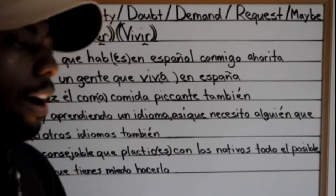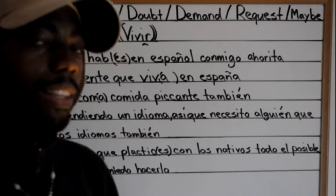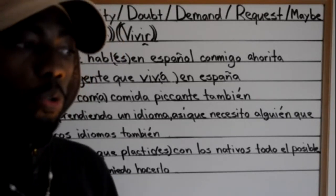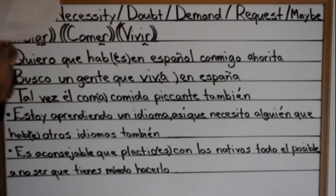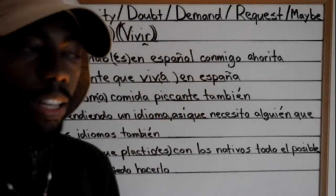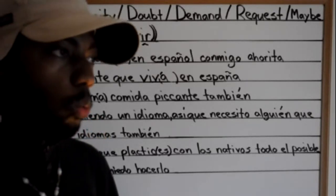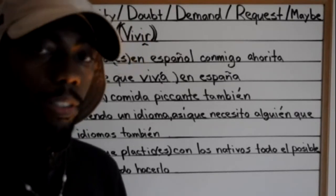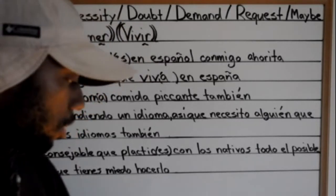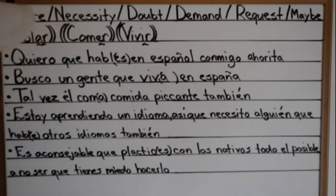Another example: you need something done, but it's not guaranteed that you'll get it. Requests and necessities are all part of subjunctivity. Basically, just remember it's when something isn't guaranteed to happen. That's my basic understanding of subjunctivity, so keep that in mind.